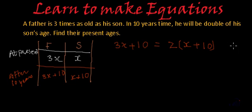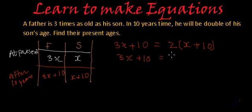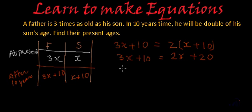We have got this equation, so now let's solve it further. First we will open the bracket on the right hand side, so this becomes 3x plus 10 equals 2x plus 20 — I have multiplied all terms inside the bracket by 2. Now using transposition, we collect all variables on the left hand side and all constants on the right hand side.